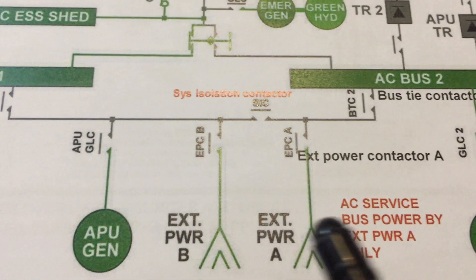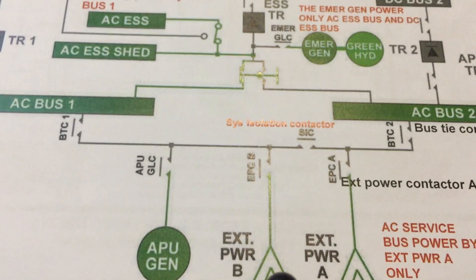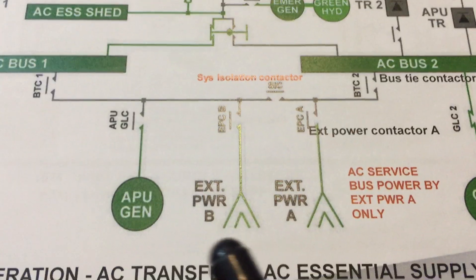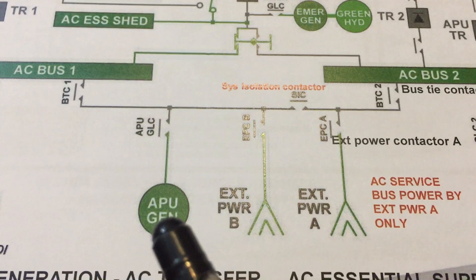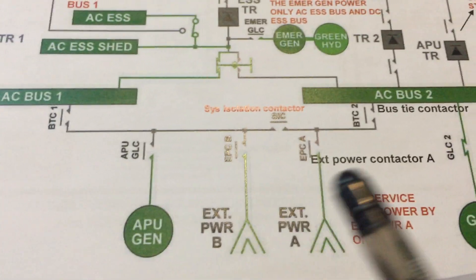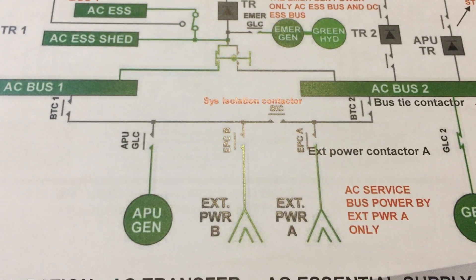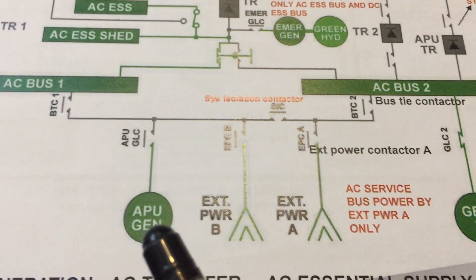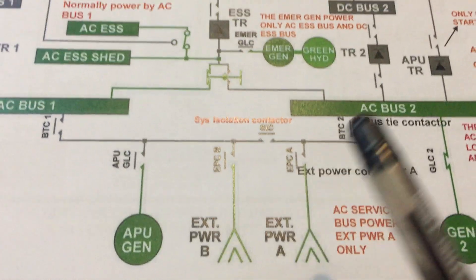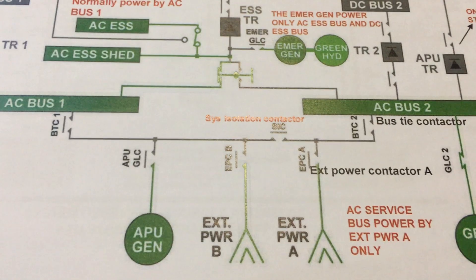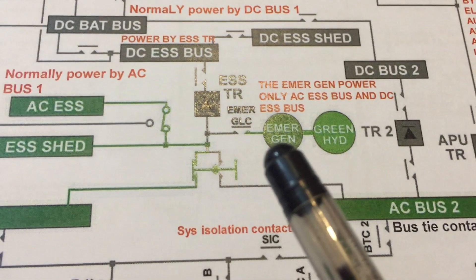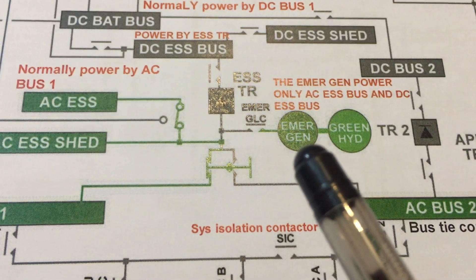When we have two external power sources available, the system isolation contactor will open so they share the load: external power A will power the right-hand side and external power B will power the left-hand side. We also have an APU generator. The APU generator can power the whole aircraft; when needed, the system isolation contactor will close automatically.